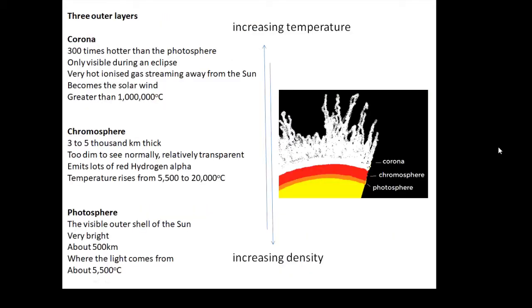There are three outer layers and three inner layers. In this video I'm talking about the three outer layers, working our way in. On the outside is the corona, which means crown. It's very hot - about a million degrees centigrade. The corona is only visible to the naked eye during an eclipse.